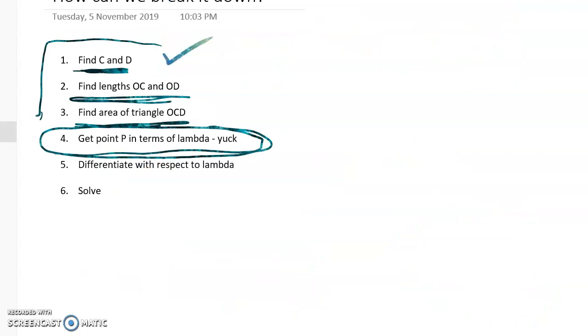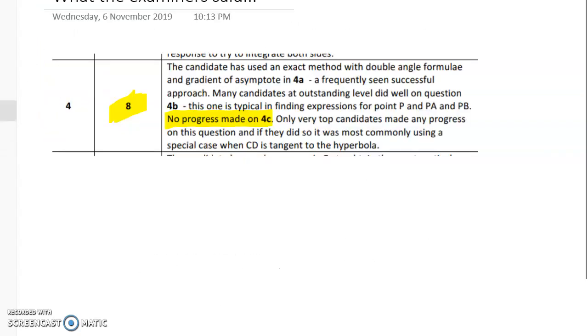So let's go back to the breakdown that I did. We found C and D. Now the next thing we've got to do is actually easy. We just have to use Pythagoras to find the lengths OC and OD. Where's it gone? Okay, let's just go to a new page.